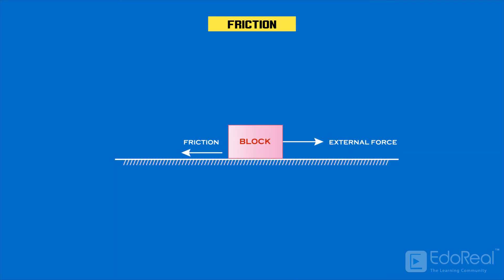We have to look at an important point that there will be no frictional force in the absence of an external force to cause a tendency for relative motion. If we apply a force downwards pressing the block, still there won't be any frictional force developed yet, because this pressing force cannot move the block.